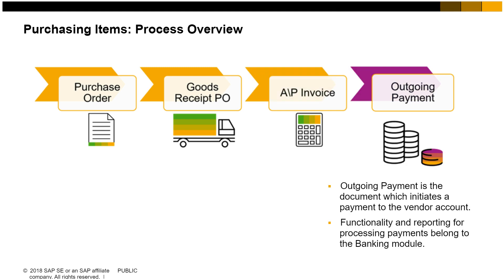The outgoing payment is the document which initiates a payment to the vendor account. There are, generally speaking, four ways of sending outgoing payments: cash, checks, credit cards, and bank transfers. There are also some additional country-specific payment methods. In SAP Business One, the functionality and reporting associated with processing payments are accessed through the banking module.